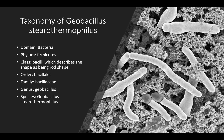The taxonomy of Geobacillus stearothermophilus: the domain is Bacteria, the phylum is Firmicutes, the class — which further describes the cell as being rod-shaped — is Bacilli, the order is Bacillales, the family is Bacillaceae, the genus is Geobacillus, and the species is Geobacillus stearothermophilus.